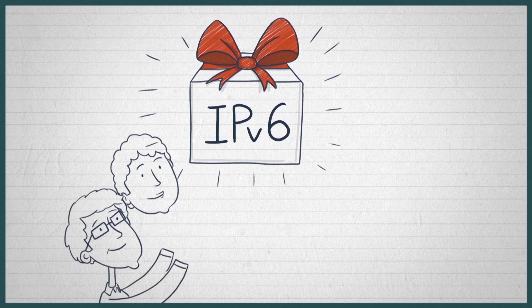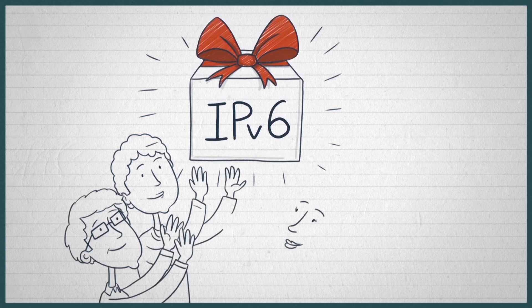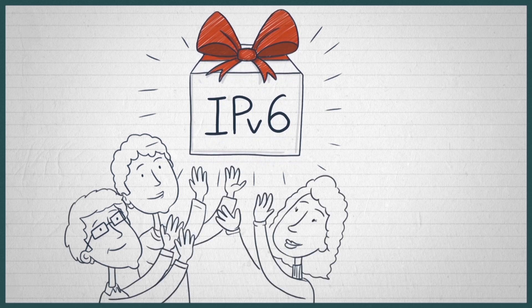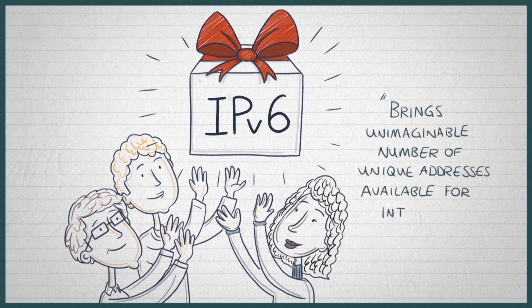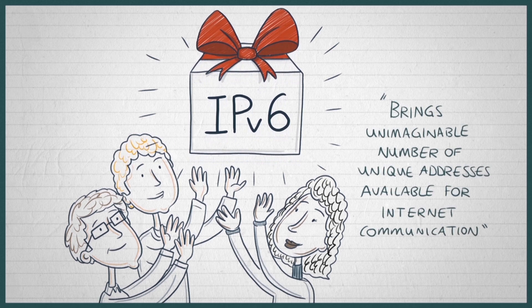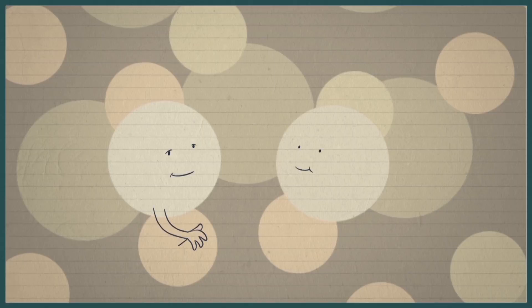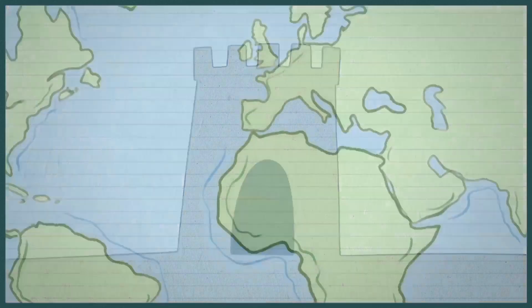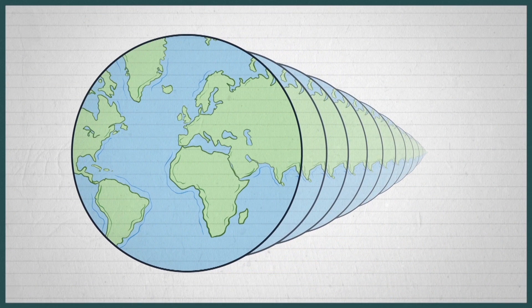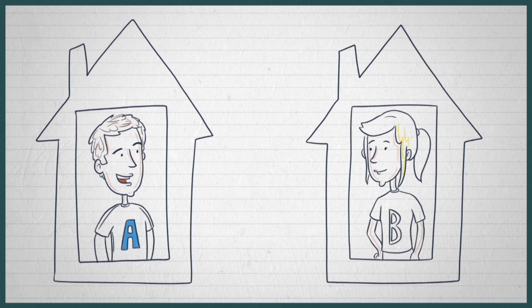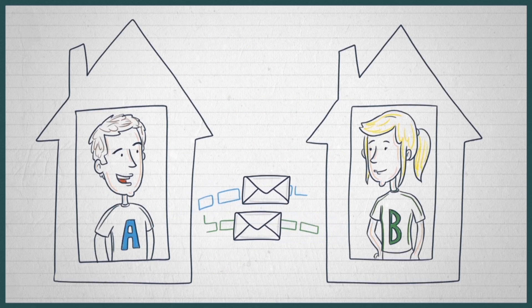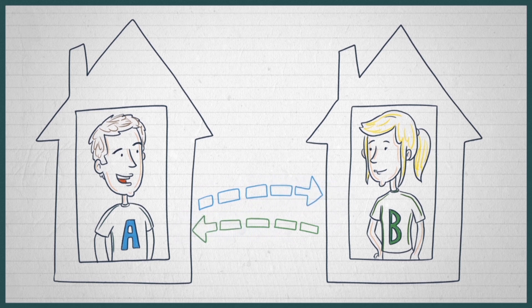IETF recognized the scalability problem of IPv4 in the early 90s, and with IPv6 introduced a scheme that brings an unmanageable number of unique addresses available for Internet communication. While IPv4 is not sufficient anymore to directly connect every person on Earth, IPv6 can connect every grain of sand on the Earth and cover over 200 million more Earths. With IPv6 it is easy to transport a message from point A to B and avoid PO box-like sharing complexity and overhead.